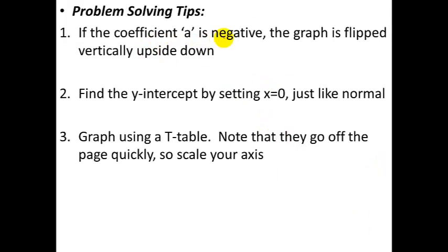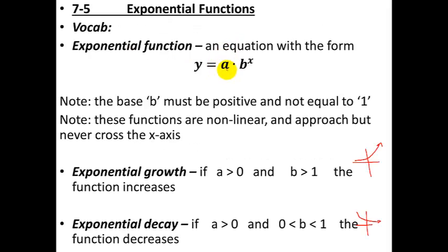If the coefficient is negative, the graph is flipped vertically, upside down. We're going to deal with this more when we learn about transformations of functions. But just be aware that for the basic level we're looking at here, your coefficient should be a positive number.